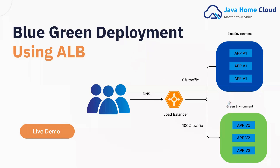By maintaining two identical environments — one is the blue environment and the second is the green environment — you can easily deploy the new version, test it, and then switch traffic instantly with zero downtime. In AWS, this is most commonly implemented using Application Load Balancer.